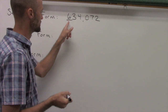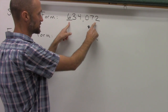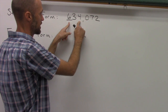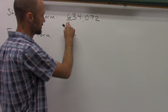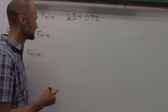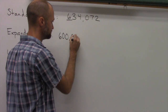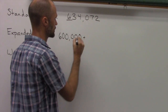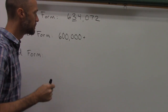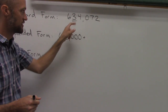What's the value of the 6? Well, it's a 6 in the hundred thousands place. Place value goes ones, tens, hundreds, thousands, ten thousands, hundred thousands. So a 6 in the hundred thousands place is worth 600,000. Then we move on to the next place value, the 3. The 3 is in the ten thousands place, so its value is 30,000.